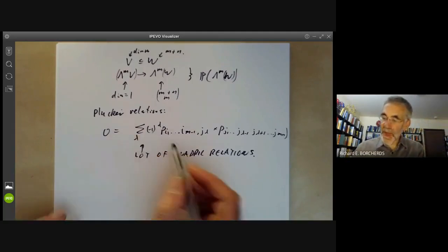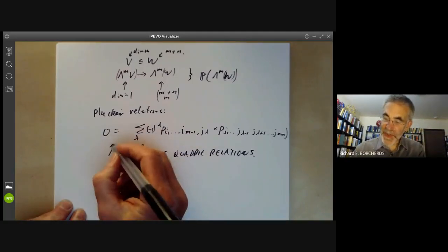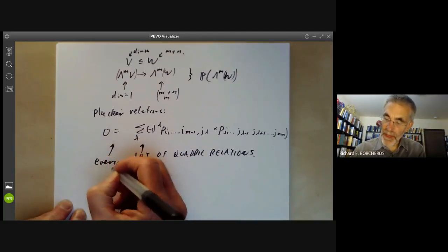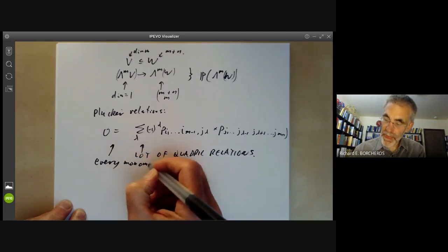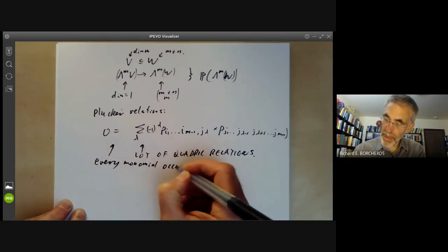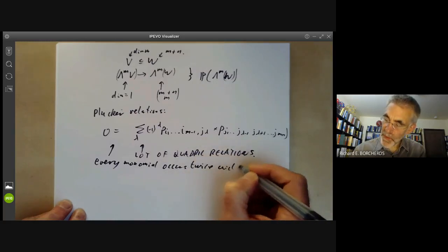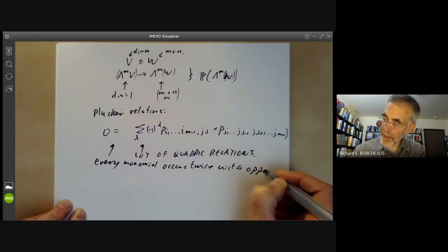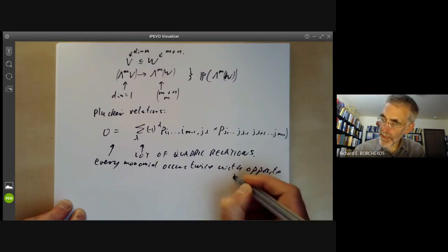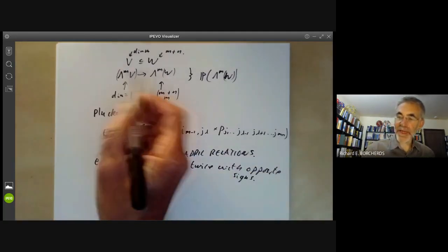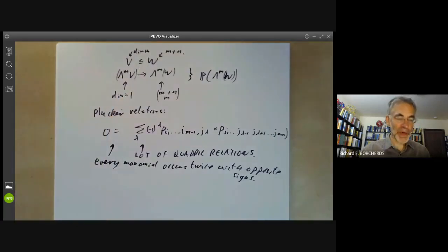And again, this cancels out because every monomial occurs twice with opposite signs. And the proof of this is like the case when m and n are two, only there's a lot more bookkeeping to do.